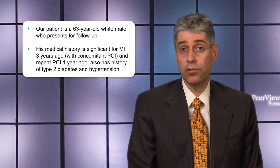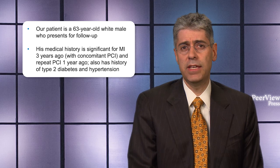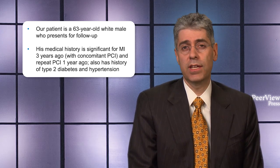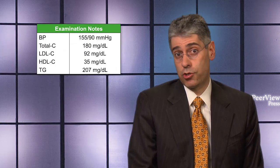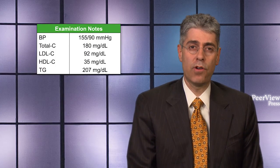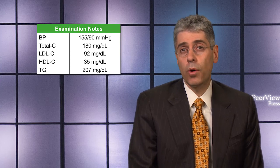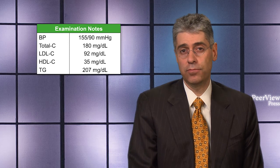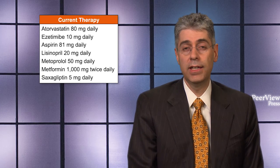Let me end with a discussion of a patient scenario. This hypothetical patient is a 63-year-old white male who presents for follow-up. His medical history is notable for a myocardial infarction about three years ago, at which time he underwent a single-vessel PCI. Recently, he needed a repeat PCI for worsening angina about a year ago. He has a history of diabetes and hypertension. On exam, his blood pressure remains a little high with a systolic of around 155. Despite being on intensive statin therapy, his LDL cholesterol remains poorly controlled at 92. He is taking atorvastatin 80 milligrams daily and ezetimibe 10 milligrams daily, in addition to aspirin, an ACE inhibitor, beta blocker, and medications for his diabetes.